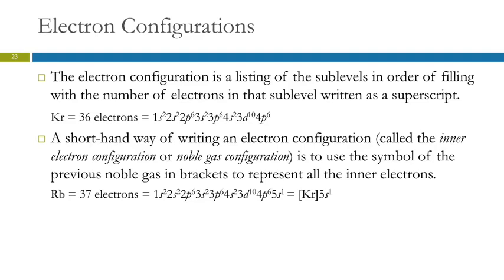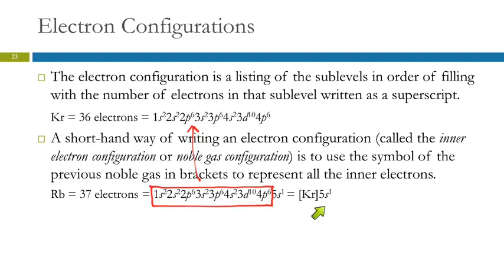You can only use noble gases for this shorthand — you can't just use the previous element. You should be able to write electron configurations both the full written-out way and as a noble gas configuration.